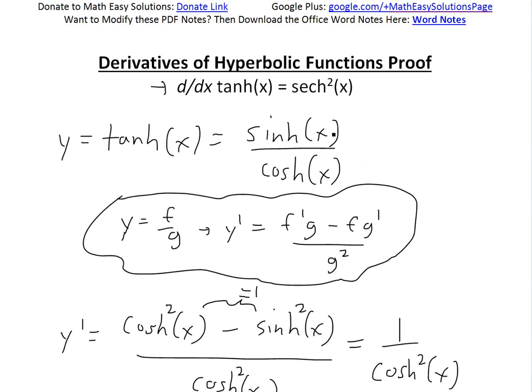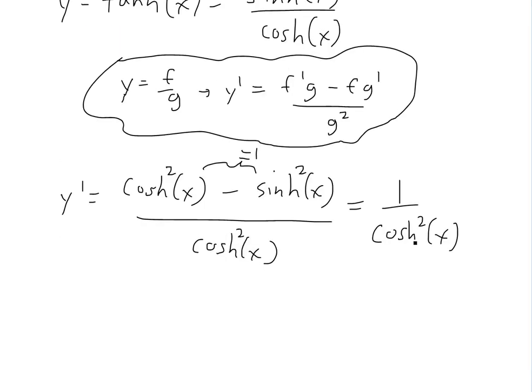And now the definition of hyperbolic secant squared is going to be 1 divided by this. And this is just equal to secant h squared of x. And there is our proof.